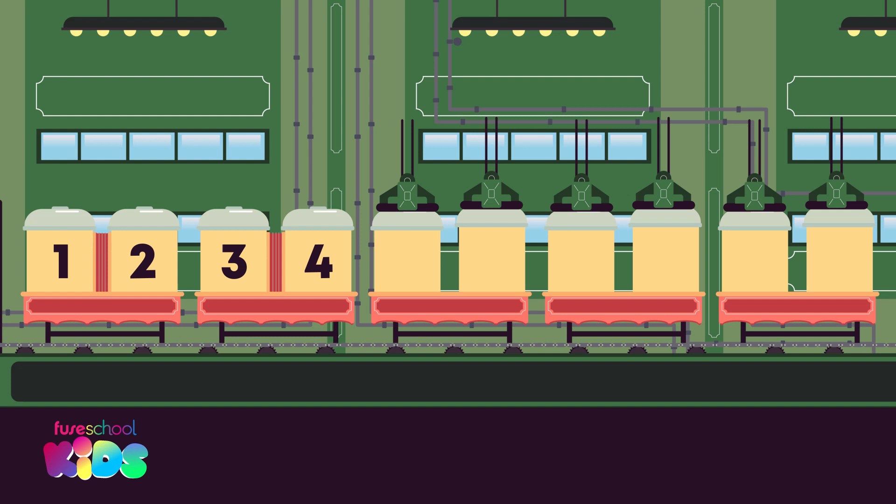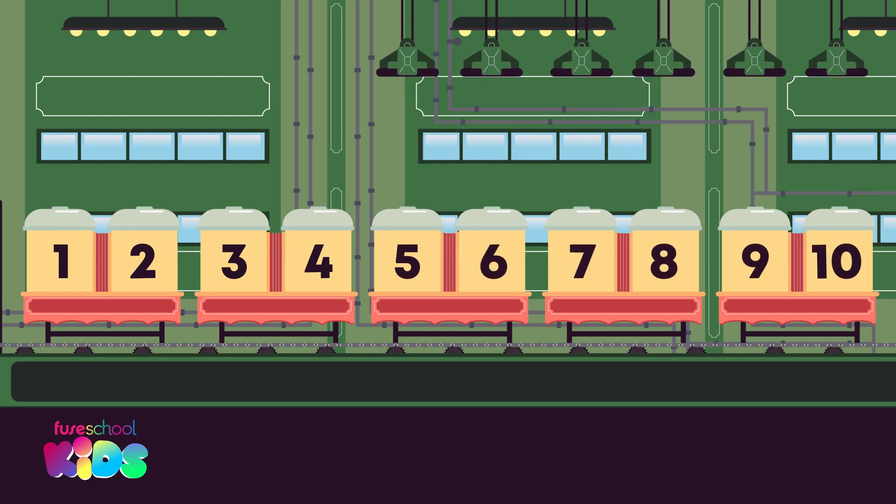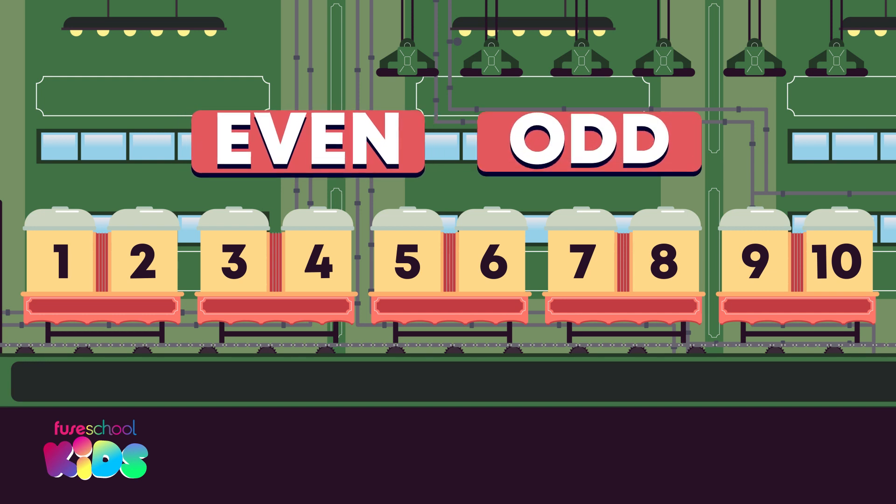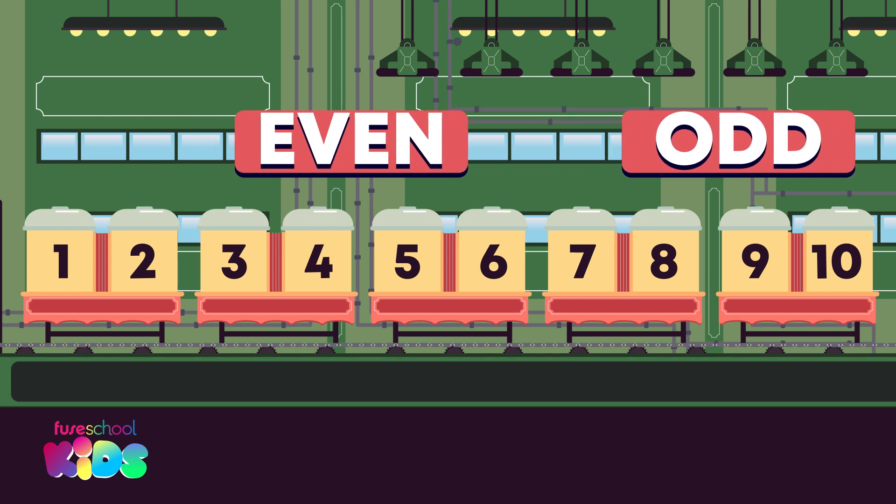How many carts have been added to the train? Count in twos. It has 2, 4, 6, 8, 10 carts. Well done! Does the train have an even or odd number of carts? Even is right.